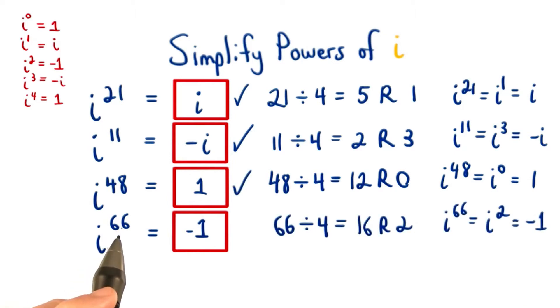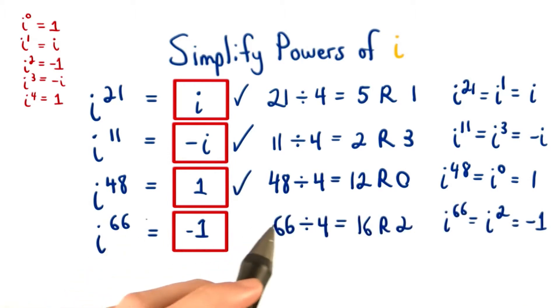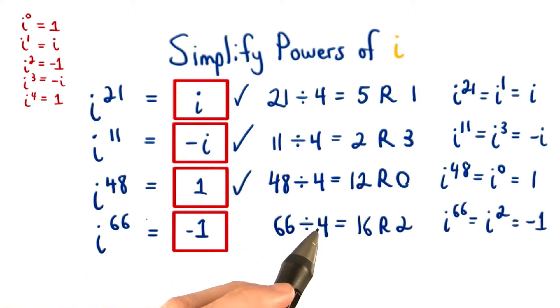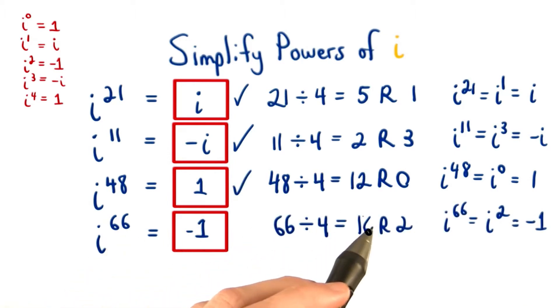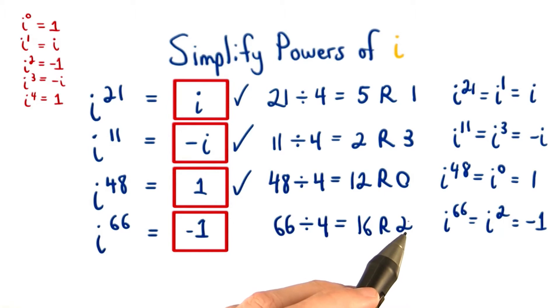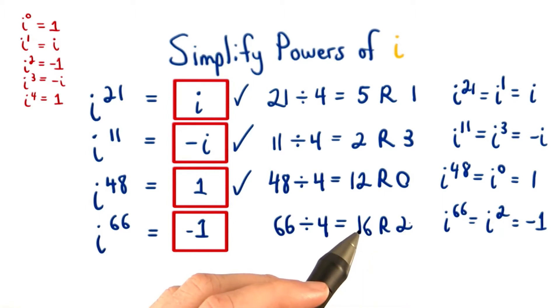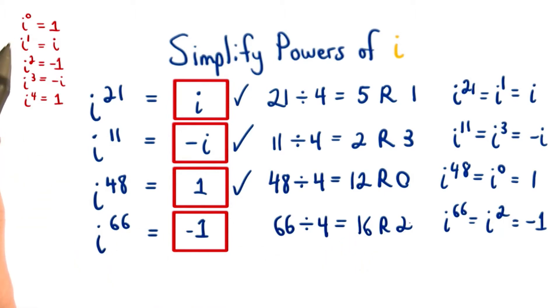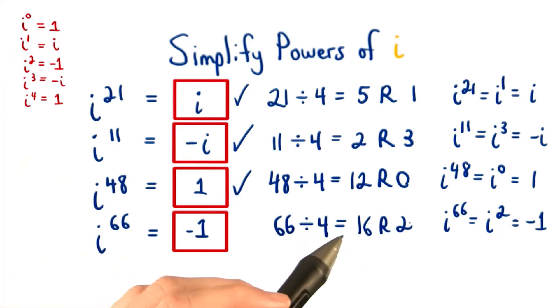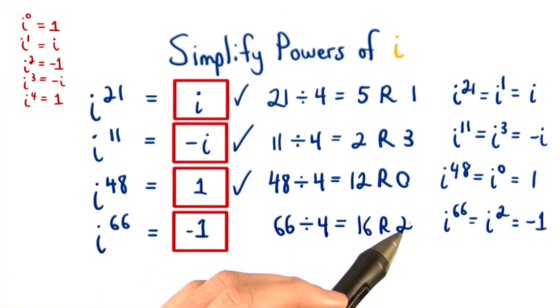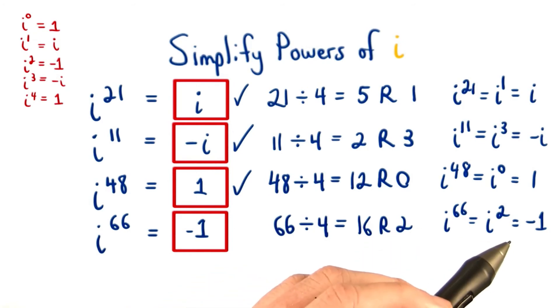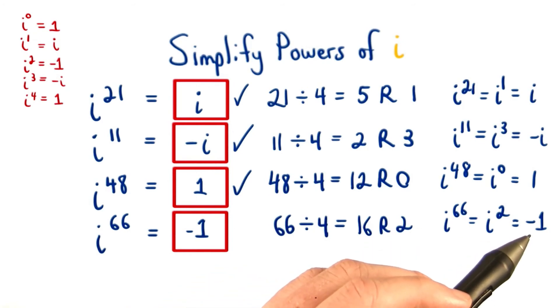And finally, for i to the 66th, we divide the power by 4 to get 16 remainder 2. This means that we cycle through the patterns of i 16 times and then wind up with i squared, which is equal to negative 1.